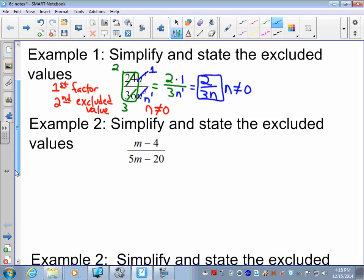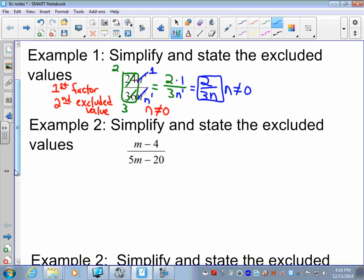Example 2, now we have, again we have to simplify and state the excluded values. Now we have a binomial in the numerator divided by another binomial in the denominator. So the first thing we should do is factor. The numerator, there's nothing to factor in the numerator. So first factor. The denominator, we have 5m minus 20. We could take out the GCF, the greatest common factor in the denominator. And we have to bring out 5, and we're going to be left with 5 times m minus 4.